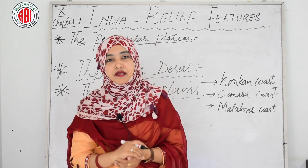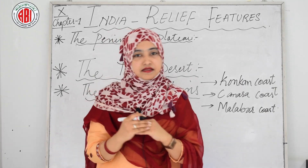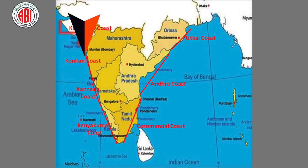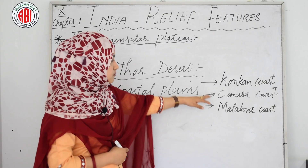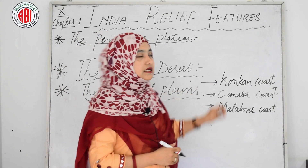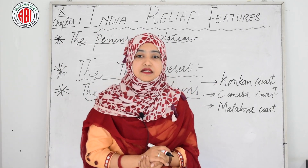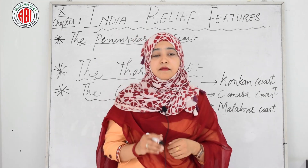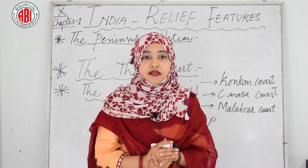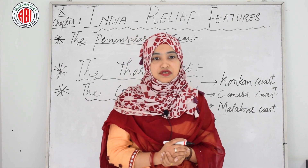The coastal plains are also divided into three parts: the Konkan coast, the Kanara coast and the Malabar coast. The Konkan coast is the northern part, touching Maharashtra to Goa. The Bay of Bengal plains are wide with a large surface structure.